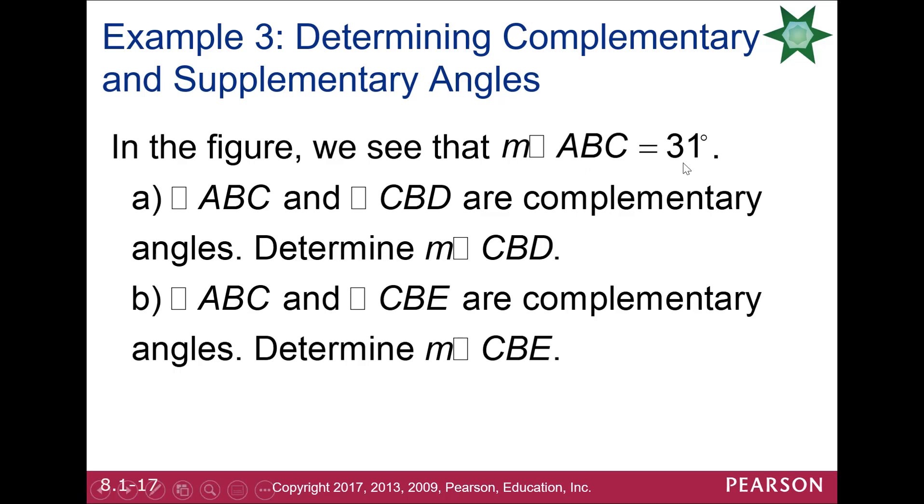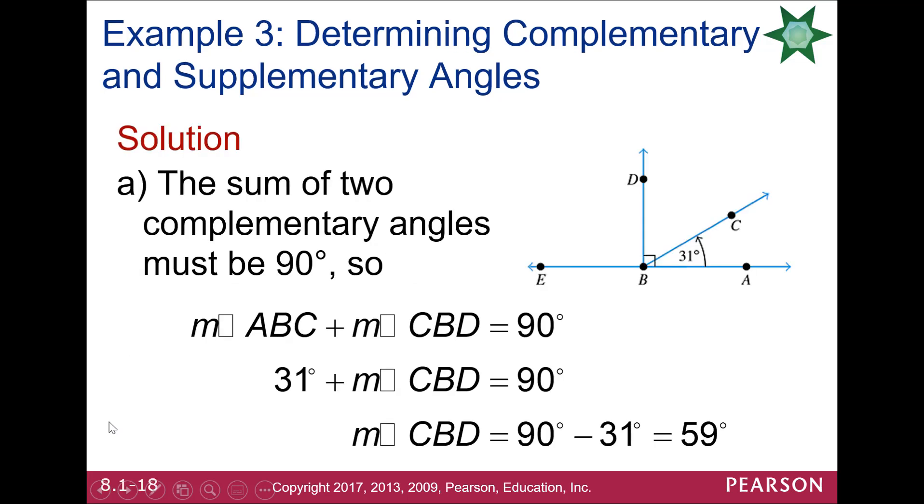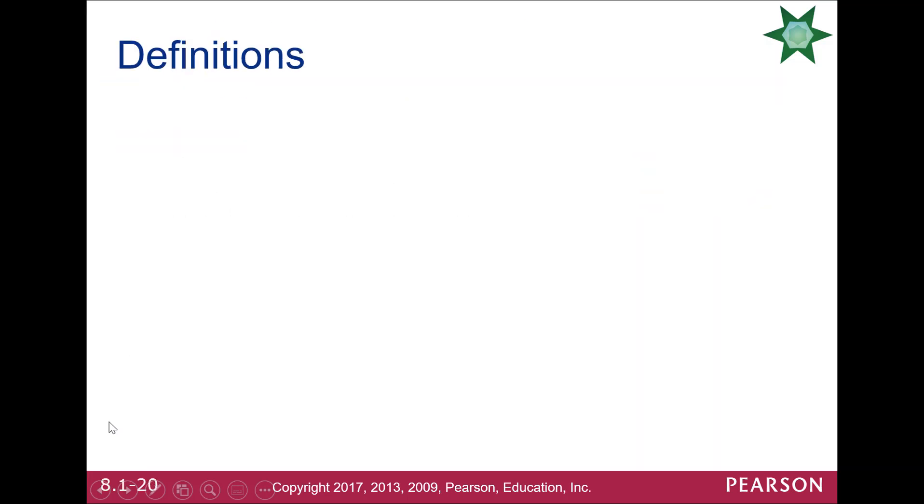And you're going to see some exercises about things like this. Let's say you have a measure of an angle is 31 degrees, and they want you to find the complement. So the complement would simply be 90 minus 31, or 59. If you have supplementary, you would simply take 180 minus 31. I'm showing you that here.